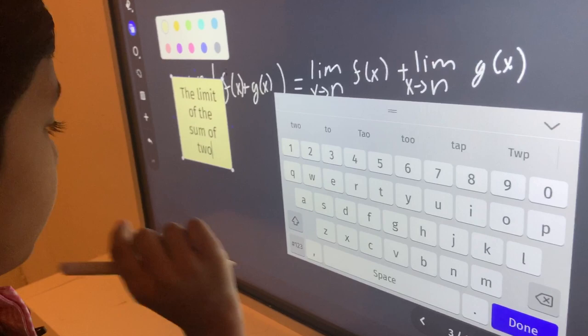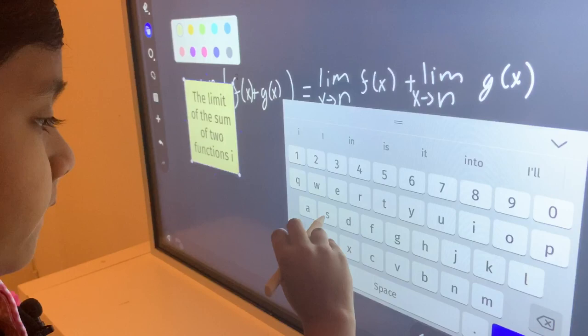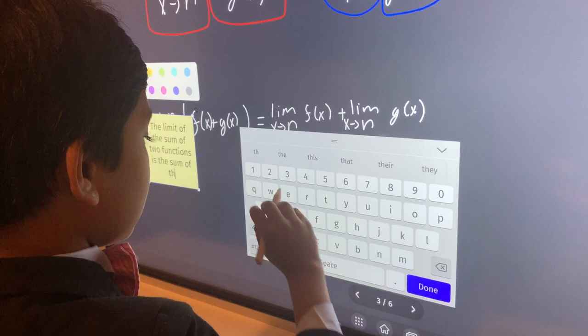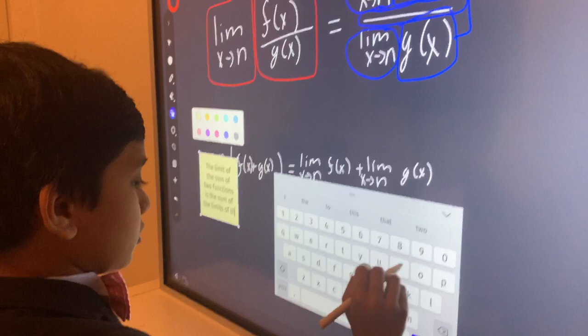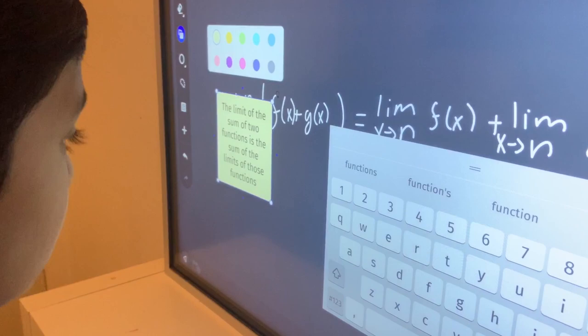The sum of the two functions is the sum of the limits of those functions. Alright, sticky note complete.